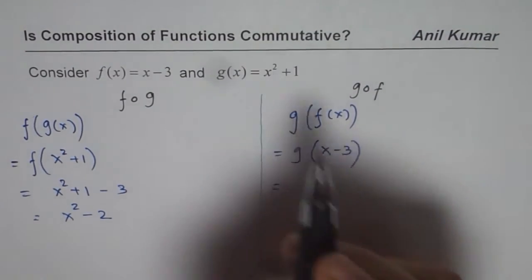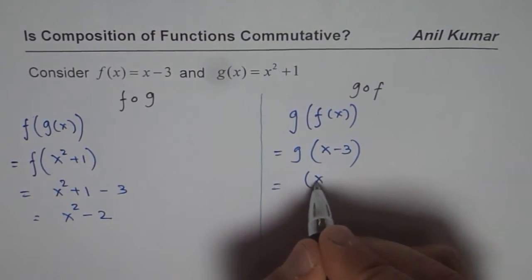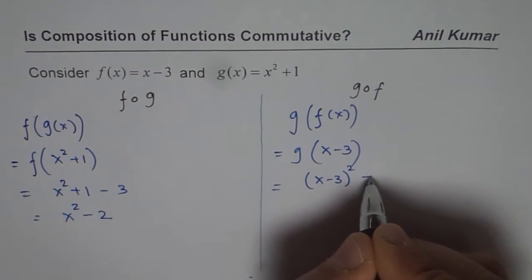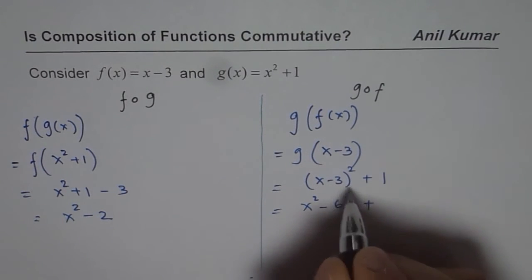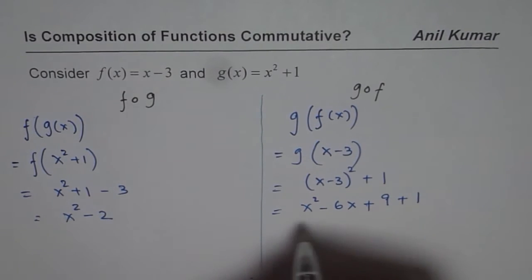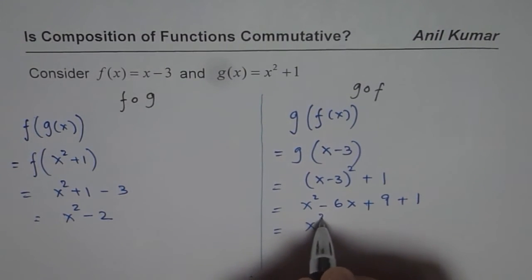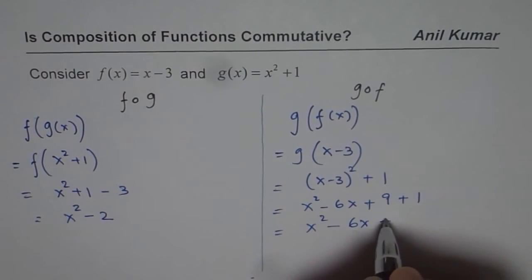So we will replace x with x minus 3. So we have (x minus 3) squared plus 1. Let us expand this. You get x squared minus 6x plus 3 squared, which is 9, plus 1 and that gives us x squared minus 6x plus 10.